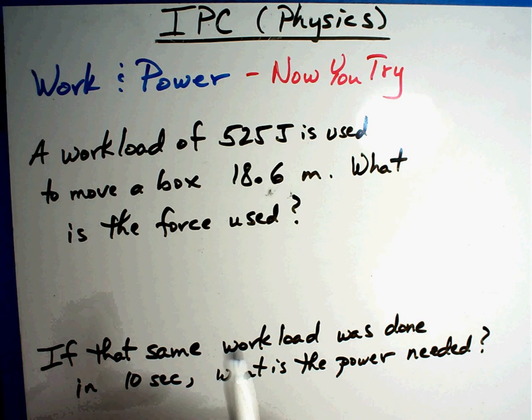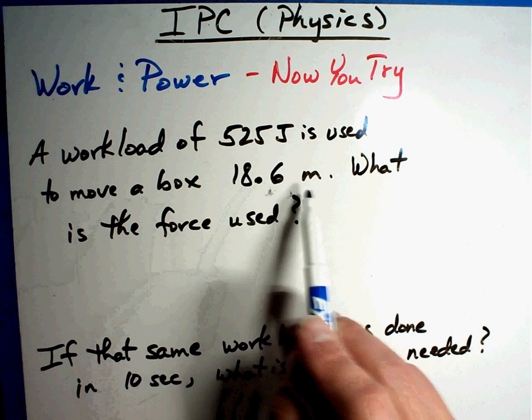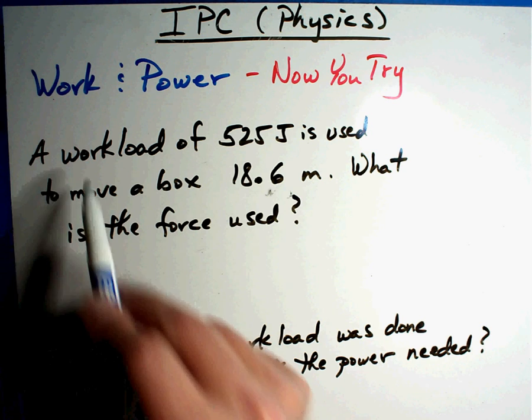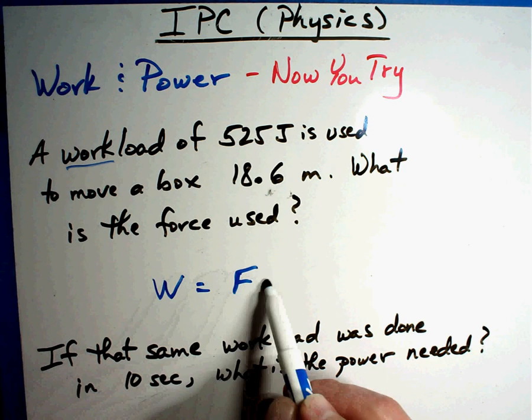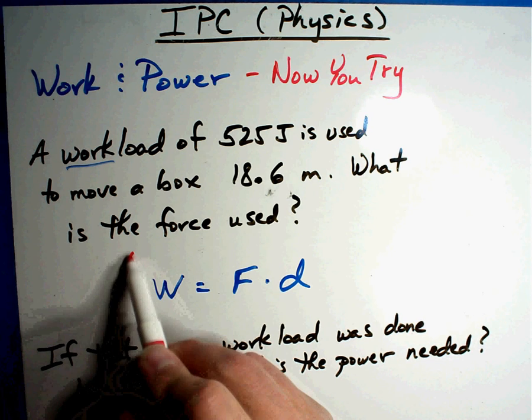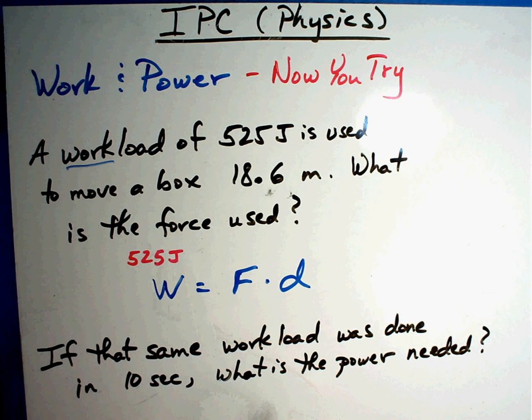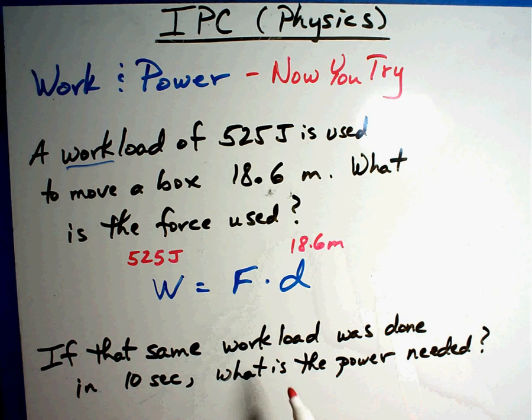Alright. A workload of 525 joules is used to move a box 18.6 meters. What is the force? Work. I see work right there. Work equals force times distance. Again, write the formula, plug the numbers where they go. A workload of 525 joules used to move a box 18.6 meters. What is the force?